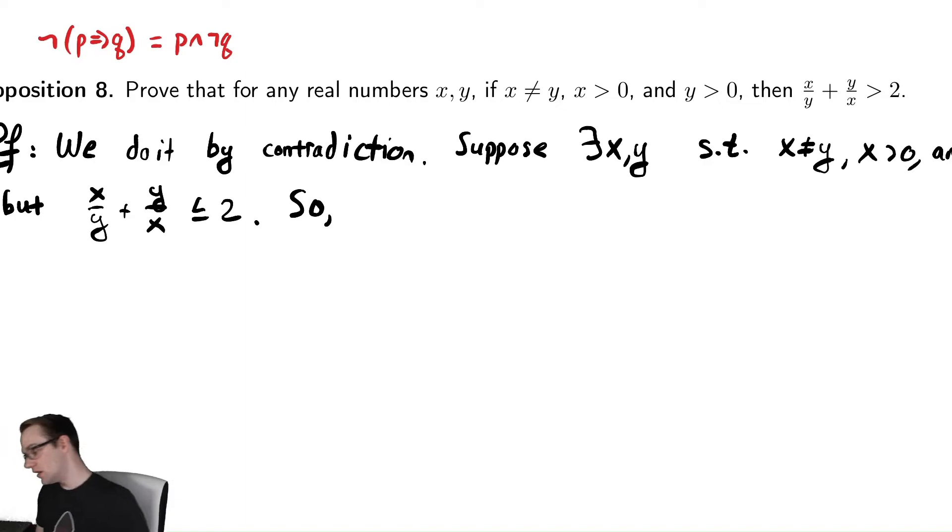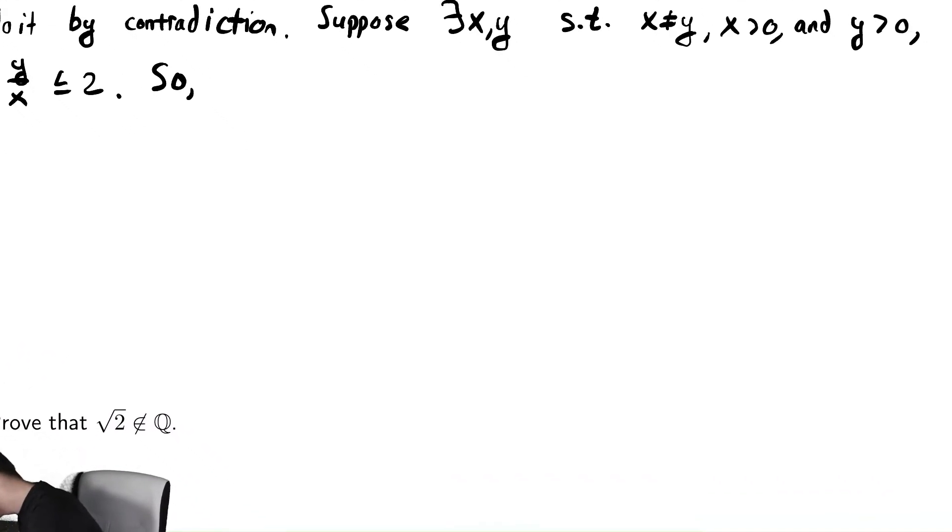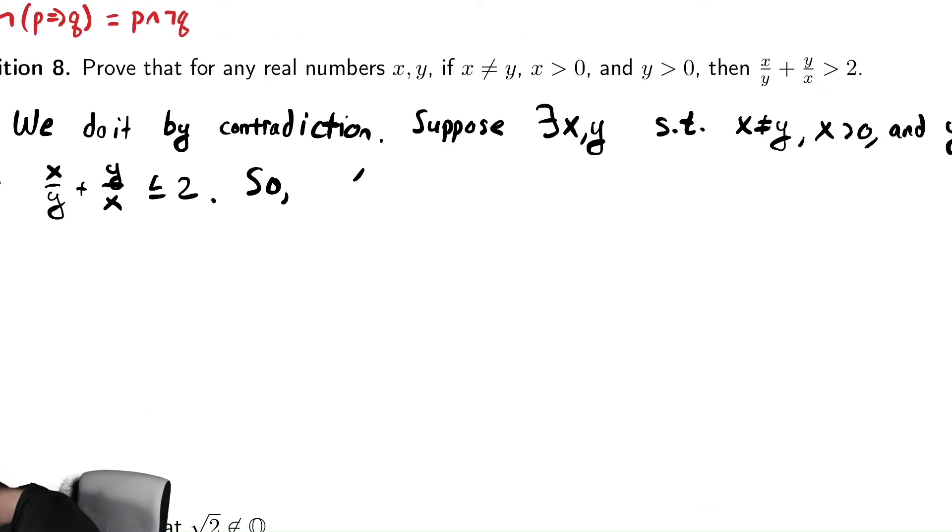So I'm going to begin by multiplying by y and x in that expression. Why is that helpful to me? It's helpful to me because I know that they aren't equal and that they're positive. I'm allowed to multiply by positive numbers in an inequality without affecting the inequality. So I'm going to take that expression, x over y plus y over x less than or equal to two. I can multiply the whole thing by x times y.